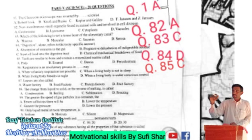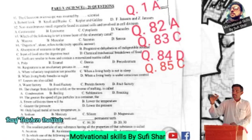Question number 82: a non-membrane organelle found in animal cells and involved in cell division. The options are: A — centrosome, B — lysosome, C — cytoplasm, D — vacuole. The correct answer is centrosome.